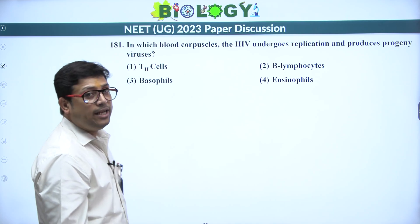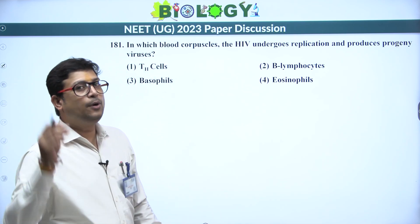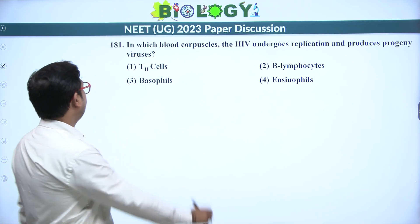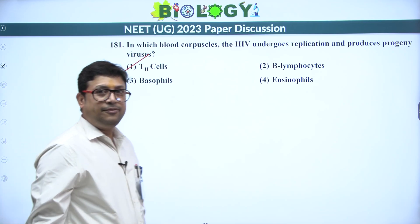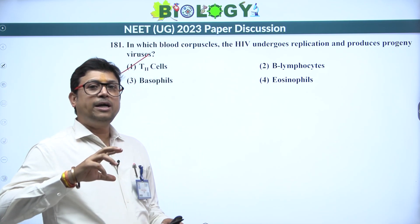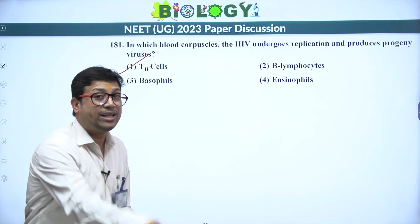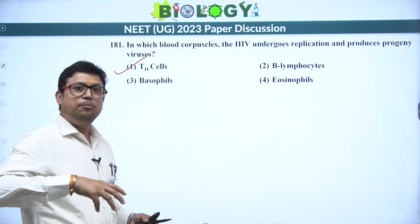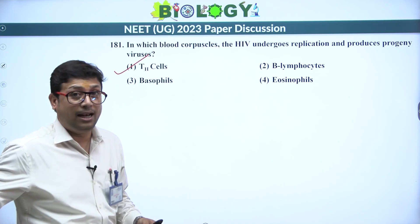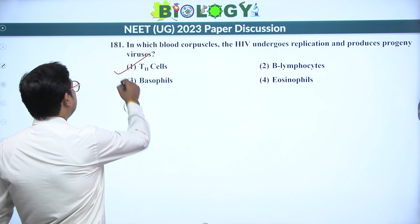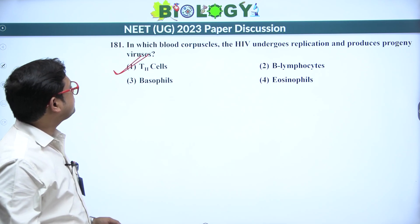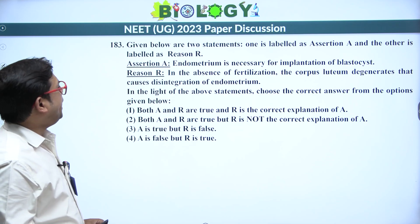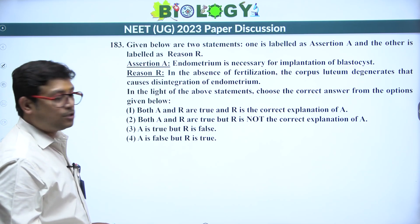Next: in which blood cells does HIV undergo replication and produce progeny viruses? Macrophage comes to mind first, but it is not in the choices. So the answer is TH cells. The difference is: the virus multiplies inside macrophages and leaves without killing them, but when TH cells are infected, the virus multiplies and leaves by killing the TH cells. Answer is TH cells — first option.